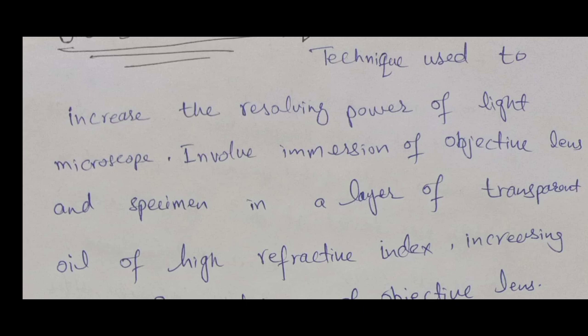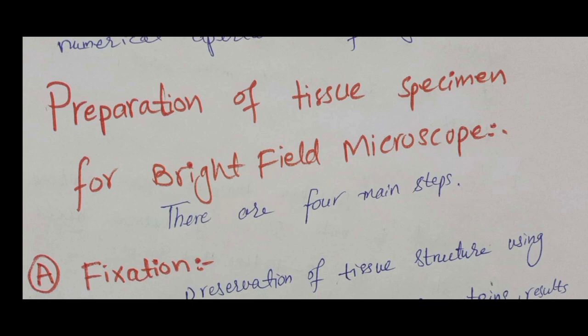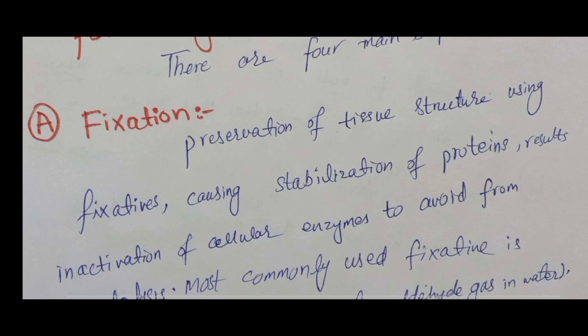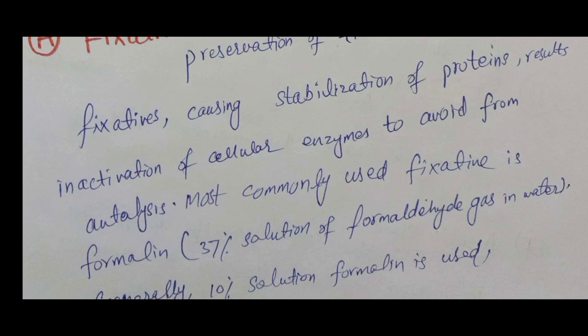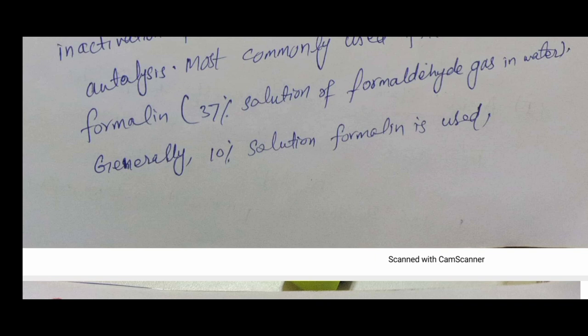How do we prepare a specimen for a bright field or light microscope? There are four steps. The first is fixation — fixation is the process in which we preserve or stabilize the tissue specimen to avoid autolysis. This involves preservation of the tissue structure using fixatives, which cause stabilization of proteins, resulting in inactivation of enzymes that can cause autolysis. The most commonly used fixative is formalin, which is a 37% solution of formaldehyde gas in water; for general purposes we use only a 10% solution of formalin.